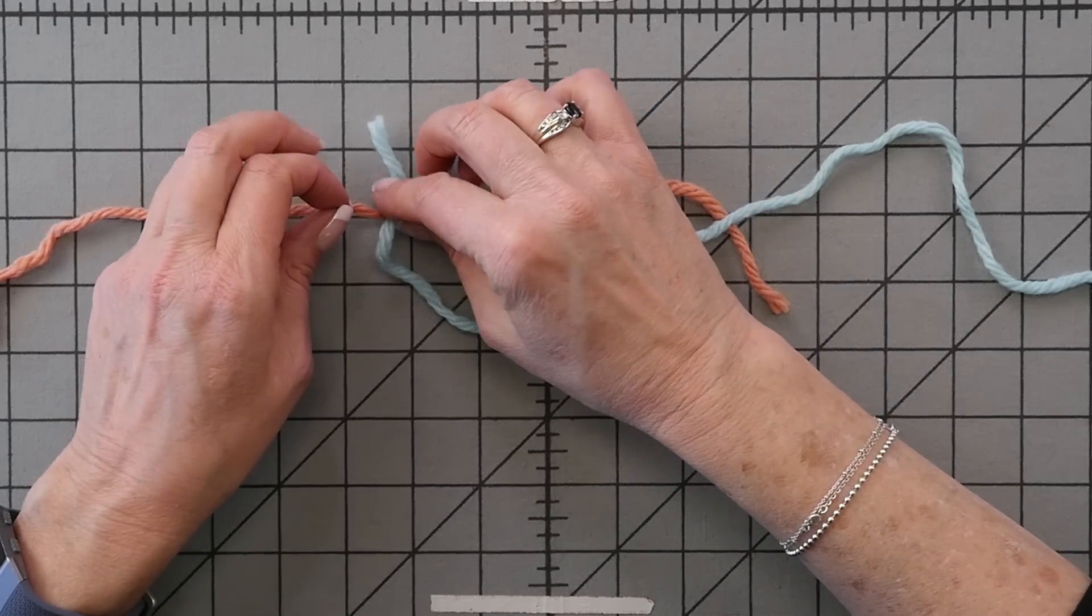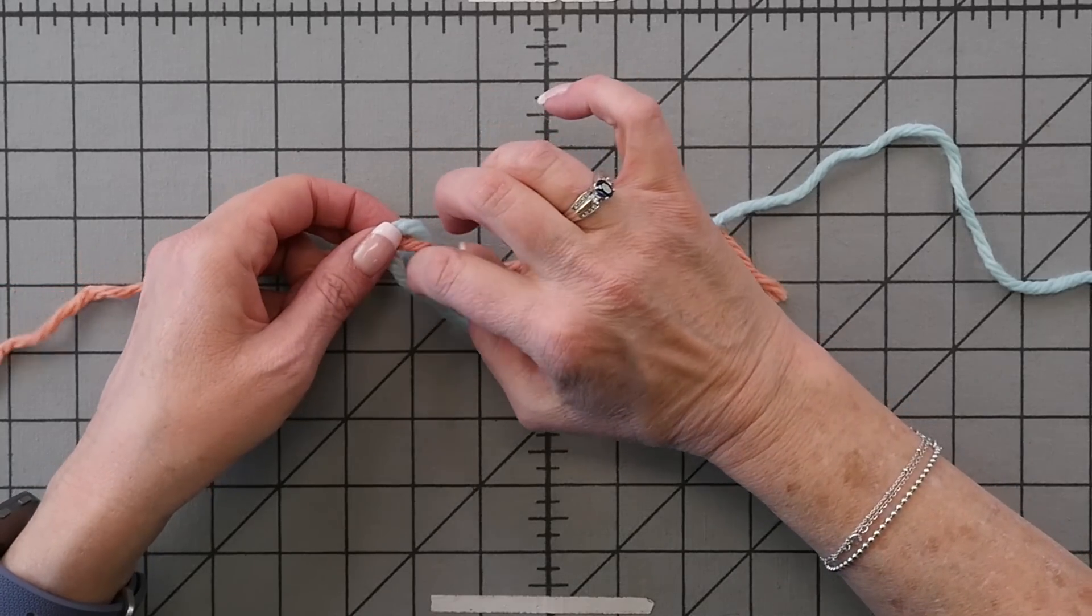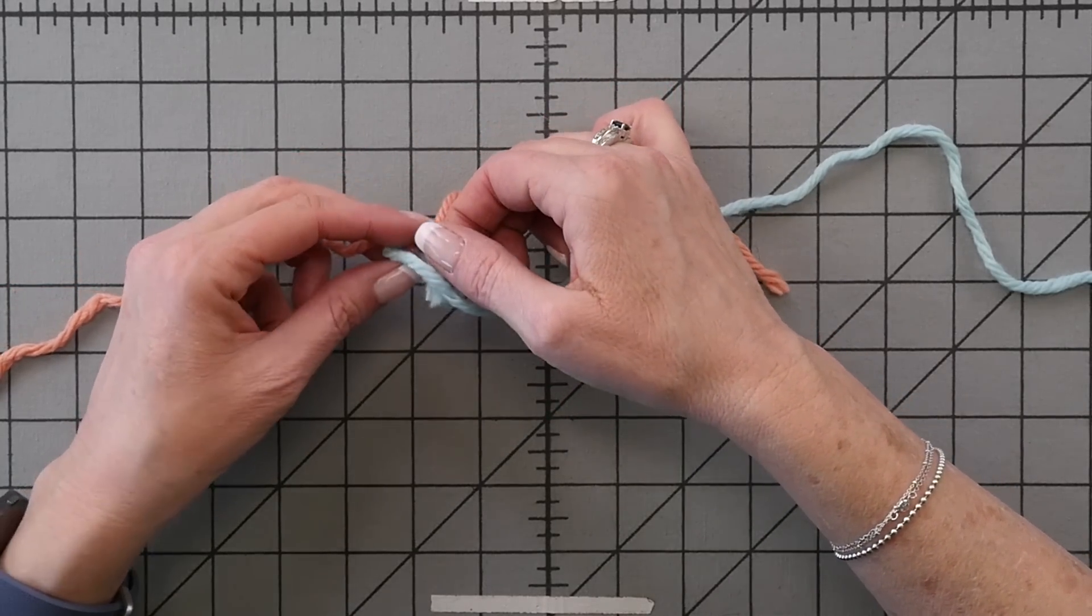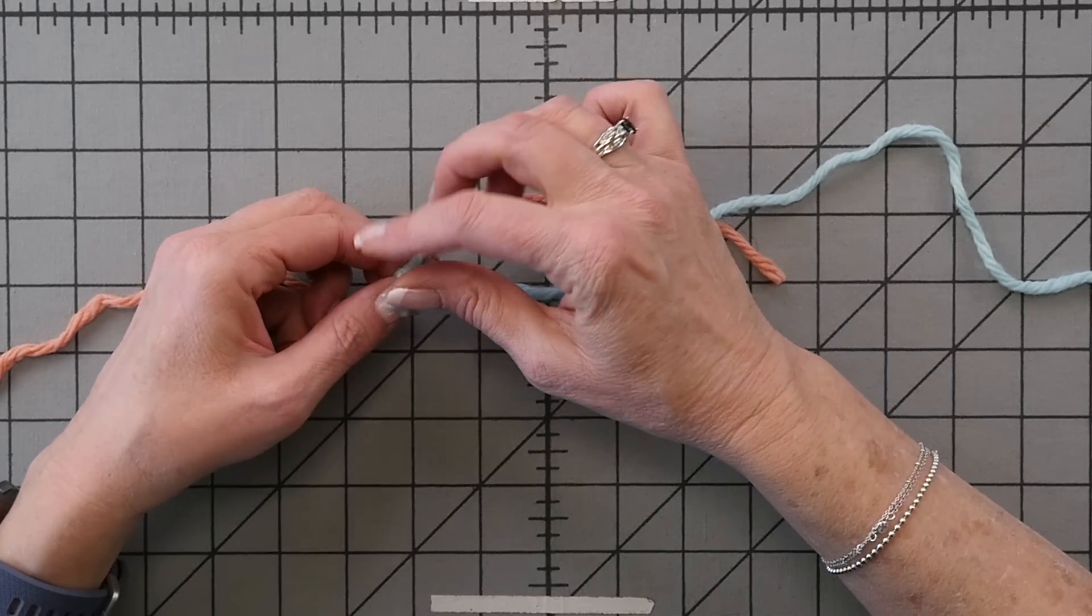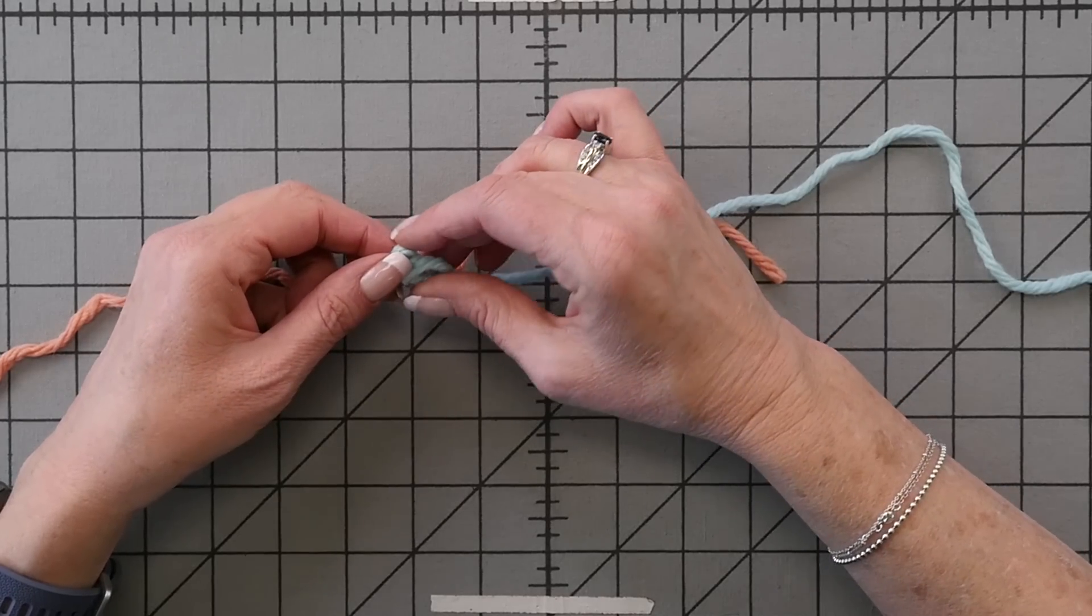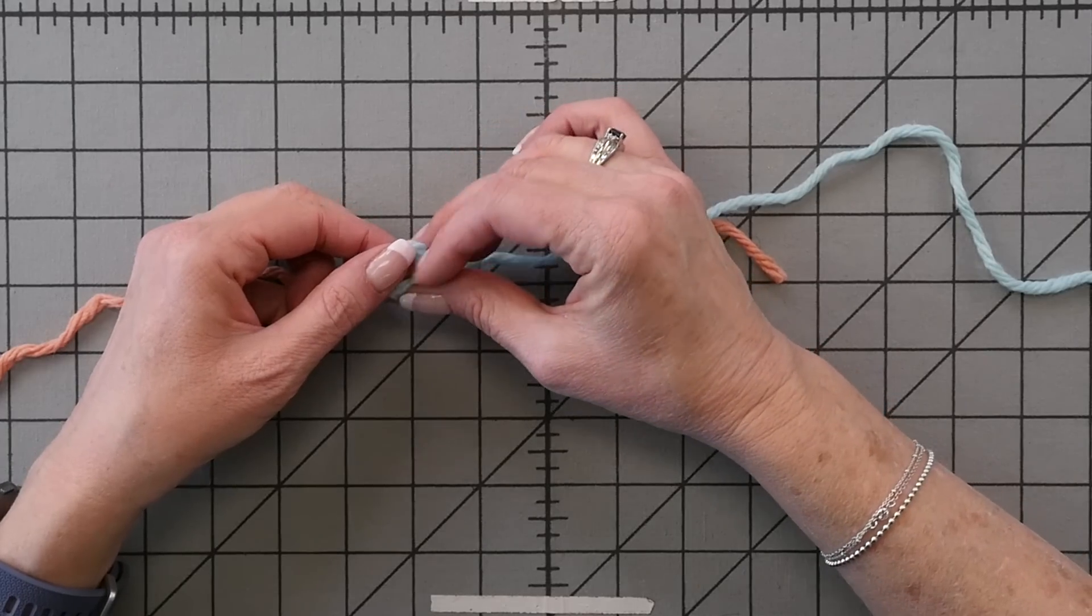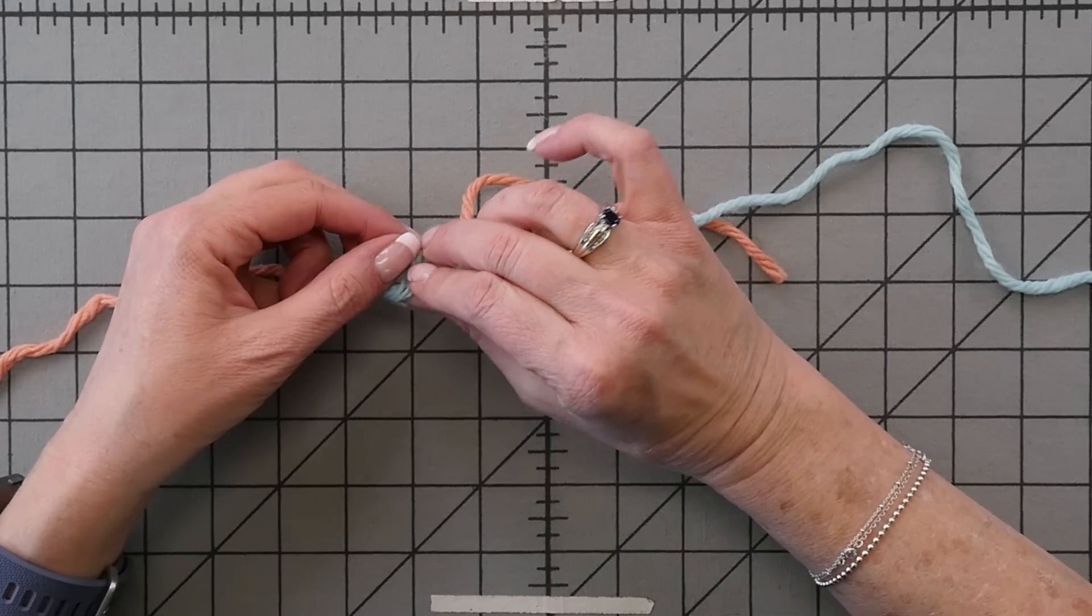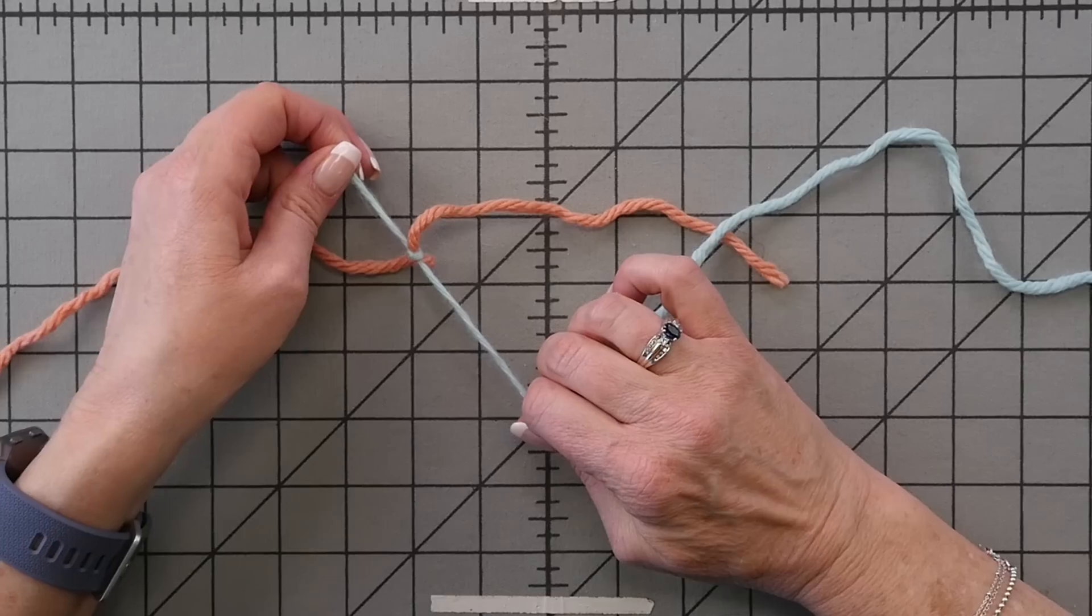The first thing I want to do is tie the end of the blue yarn to the pink yarn, or around the pink yarn. Give that a good tug to make it a tight knot.